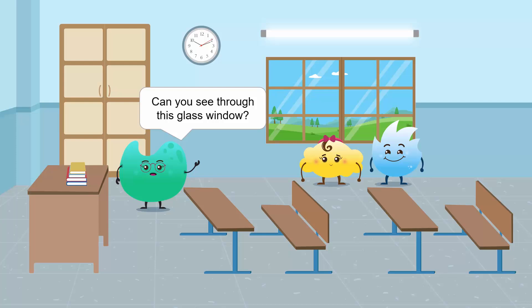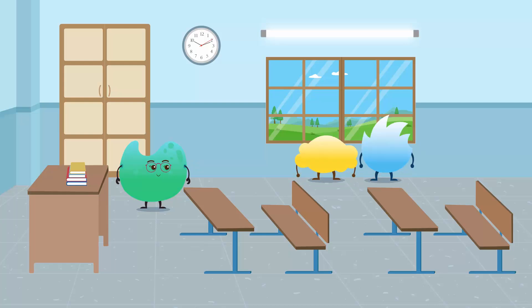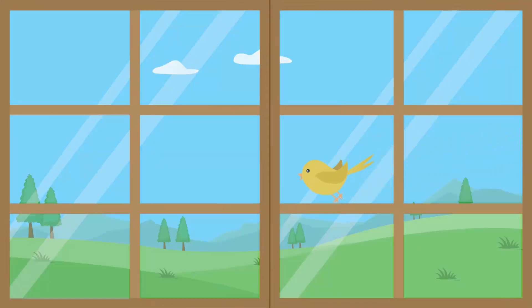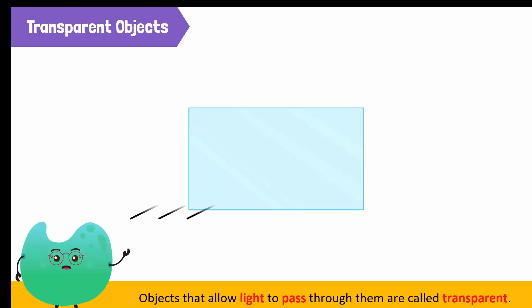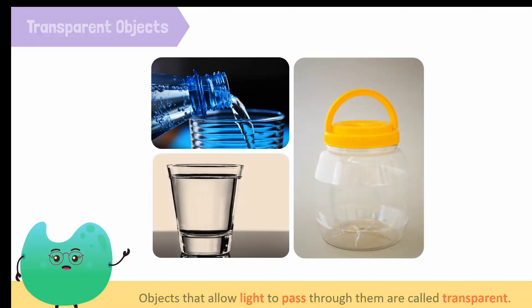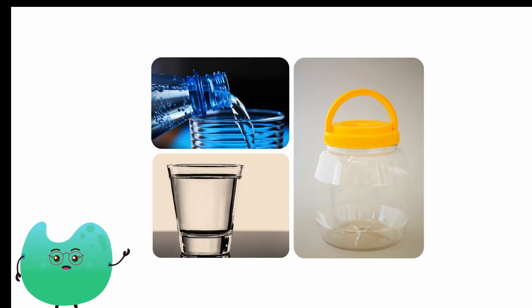Can you see through this glass window? Yes, look at that bird. You can see the bird because the window allows light to pass through. Objects that allow light to pass through are called transparent objects. Clear water, glass, and some plastic sheets are a few examples of transparent objects.